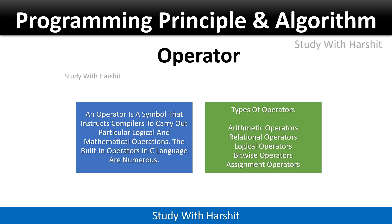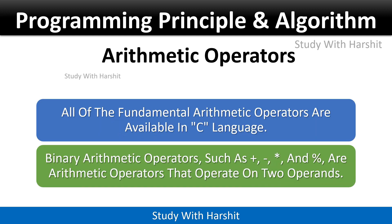An operator is a symbol that instructs the compiler to carry out particular logical and mathematical operations. The built-in operators in C language are of numerous types: arithmetic operator, relational operator, logical operator, bitwise operator, and assignment operator. These are the types of operators. Now let's discuss all of these in detail.